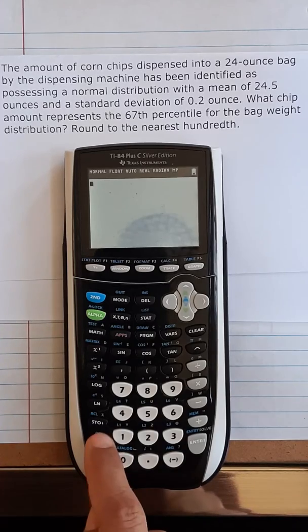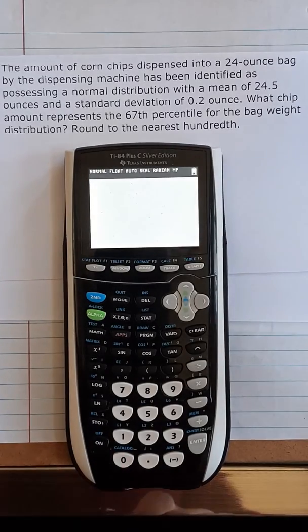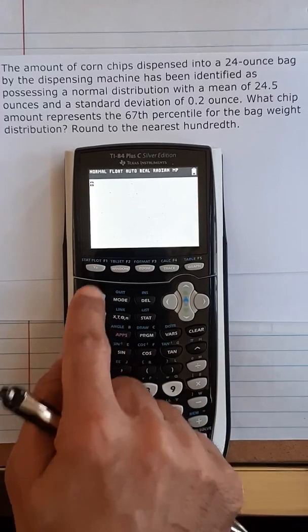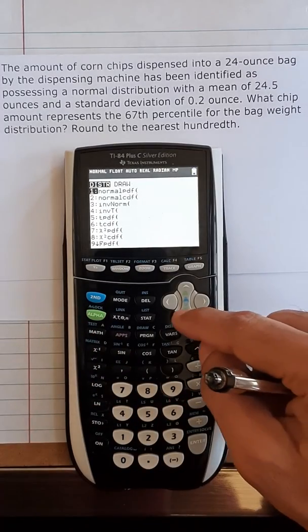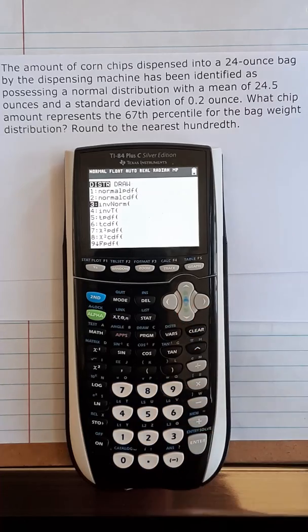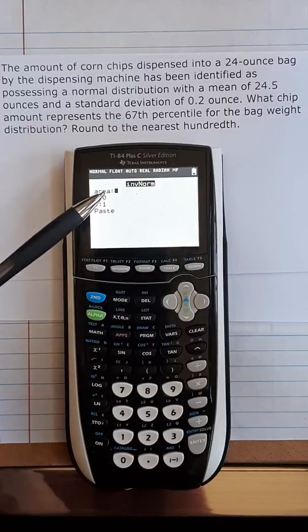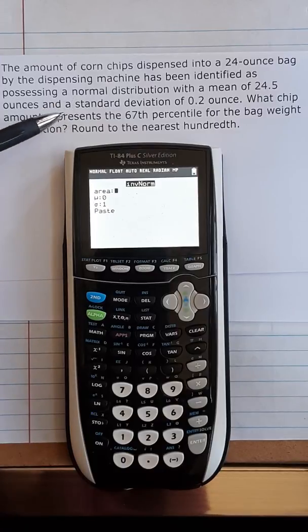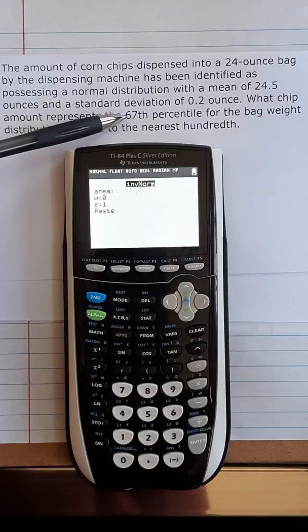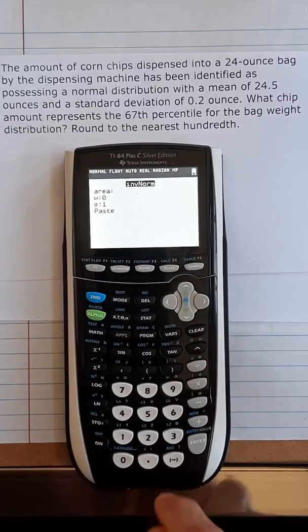So this is how it would go: go to second, then VARS, and go to number 3 inverse norm, press enter. And you have to now fill in this information here. So area, the probability or this representation of 67th percentile or 67 percent, so that's 0.67.